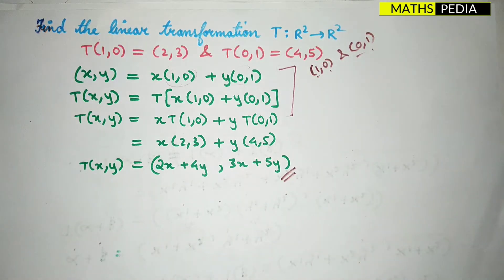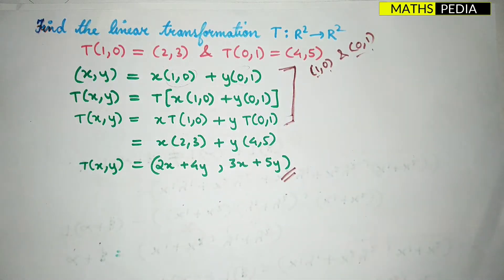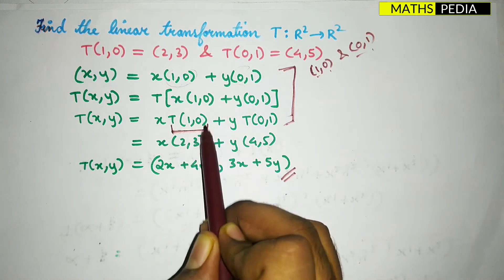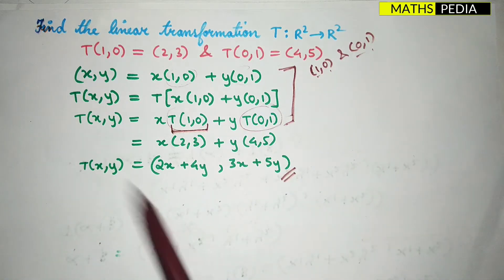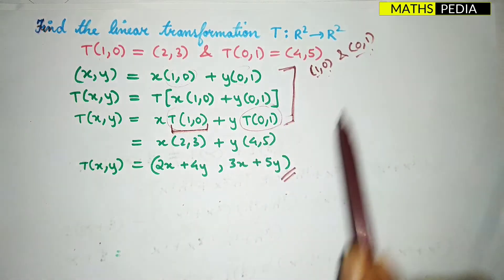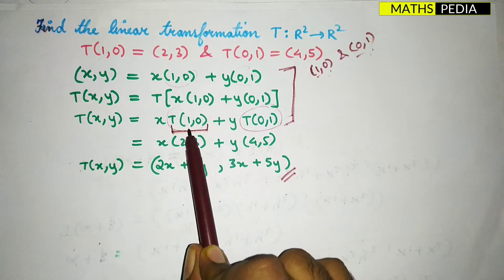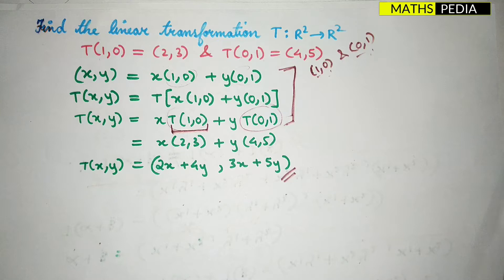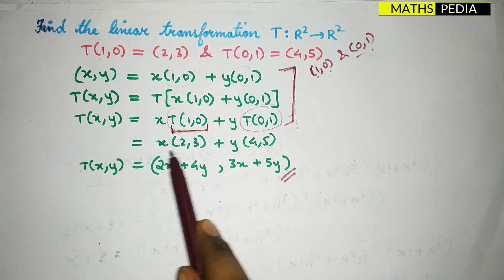Sometimes we'll take one more problem. Always remember these three steps — this will be the final answer step. If the question does not contain the values of T(1,0) and T(0,1), which are the standard basis vectors, then we have to find those values in order to get the linear transformation. Always remember these three steps are necessary to get the answer.